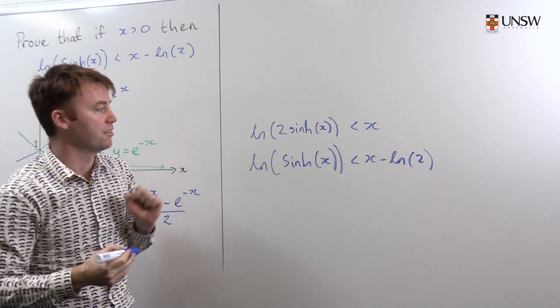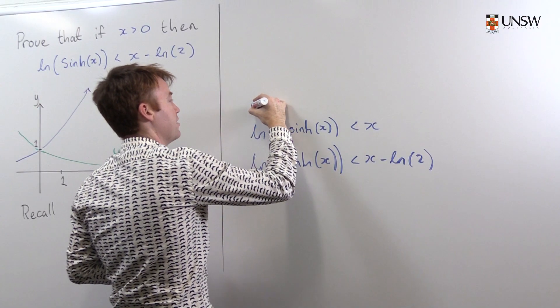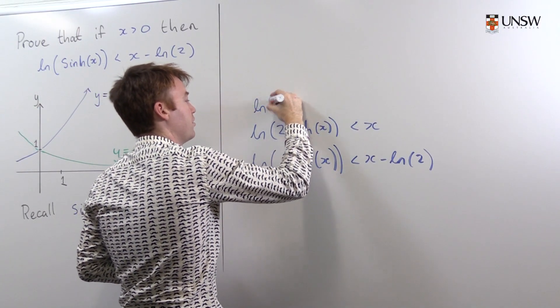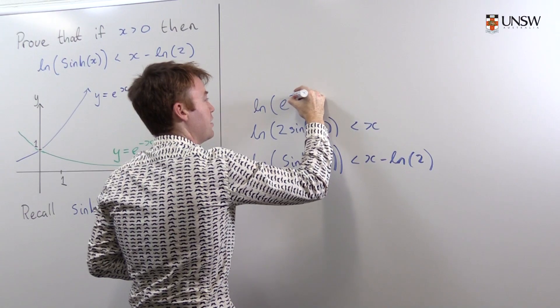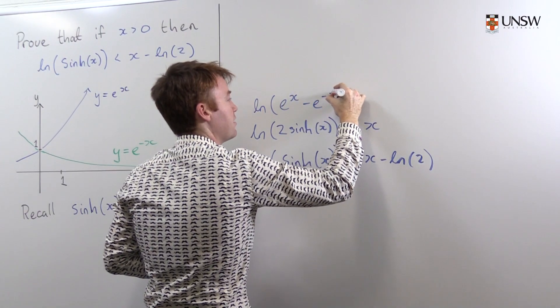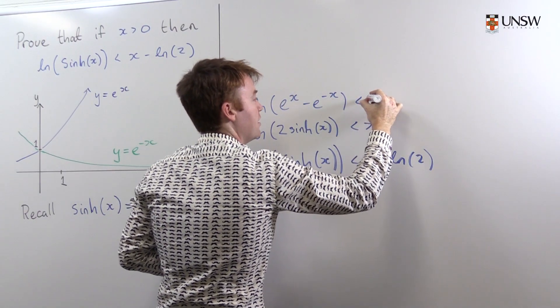And now I can use the definition of hyperbolic sine to say that this is the same as natural log of e to the x minus e to the negative x is less than x.